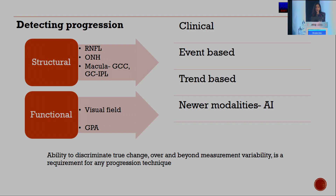Structural progression can be assessed with OCT using various tools such as RNFL thickness, optic nerve head parameters, and later-added parameters such as the macular ganglion cell complex and the ganglion cell IPL thickness. Functional progression can be detected using visual fields — that is, perimetry — and the newer tools of glaucoma progression analysis. Progression can be detected clinically, or it could be event-based or trend-based, and newer modalities like AI are also now stepping in.